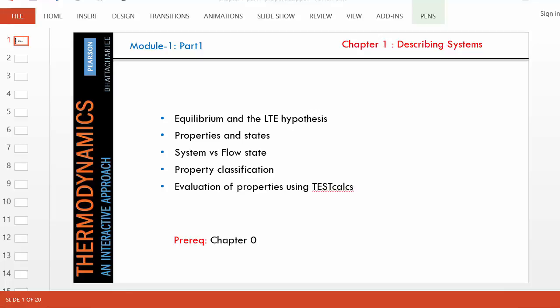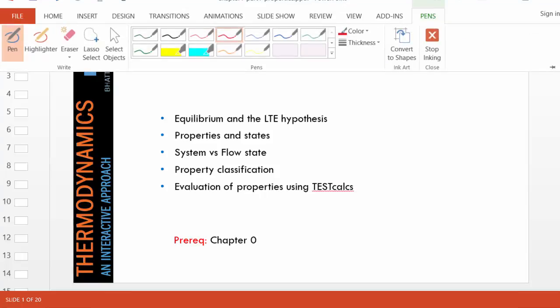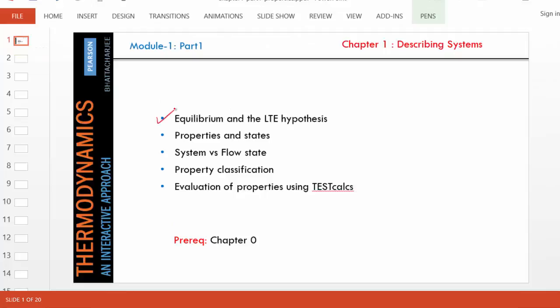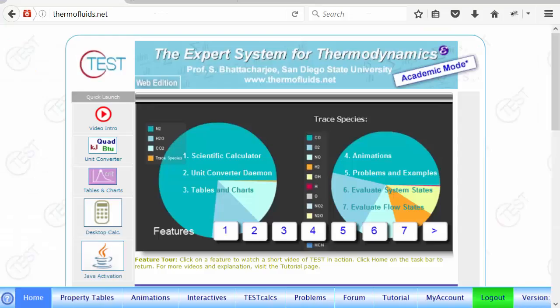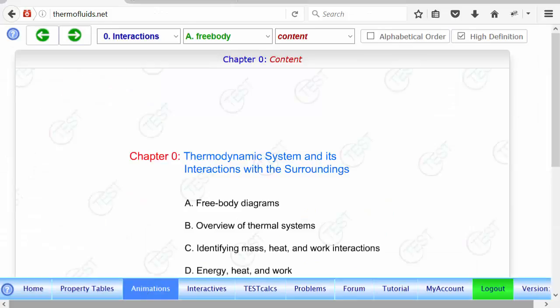Hello. This module, module 1, which is about chapter 1, is all about describing a system or a flow. In this particular part, we are going to cover what is known as equilibrium and the local thermodynamic equilibrium hypothesis and define a few properties of states. So, let's begin with an animation of a very complex general system.